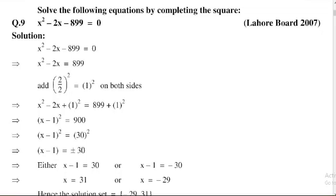x² - 2x + (1)² equals (x - 1)² equals 899 + (1)² = 900, which is the square of 30.